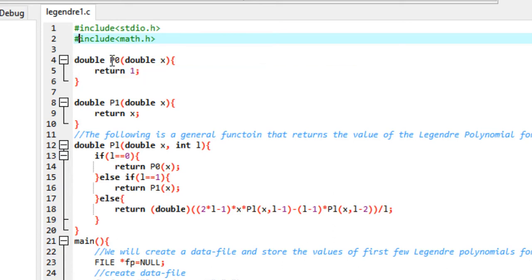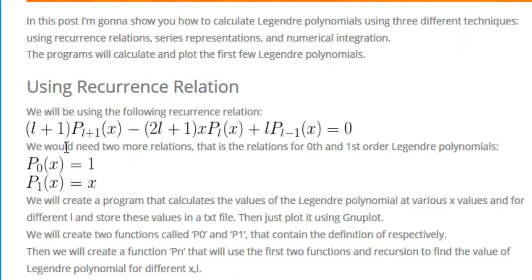Create a function called P0 of the return type double. It takes the parameter x of type double and returns one. Basically it didn't have to take any parameter, but for the sake of uniformity I made it take up this parameter. Similarly, create another function P1 that would denote the first Legendre polynomial. It takes the parameter x of type double and returns x because that is what P1 is.